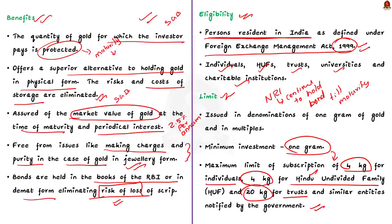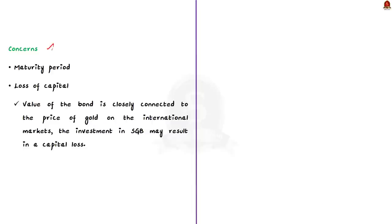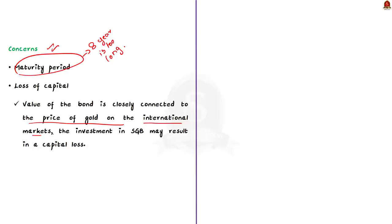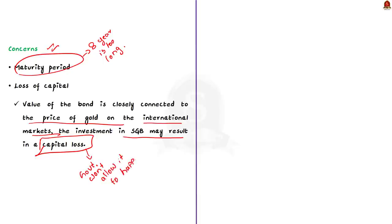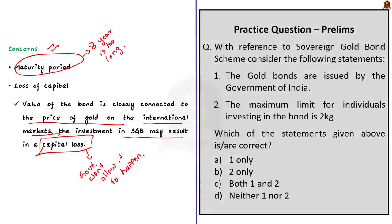One of the main concerns regarding Sovereign Gold Bonds is the maturity period — the eight-year maturity period may make many investors uninterested. Another concern is that since the value of the bond is closely associated with the international price of gold, the investment may result in capital loss. However, gold is a valuable commodity and the government is committed to ensuring its price remains stable. To recap, we saw important points about the Sovereign Gold Bond Scheme along with its advantages and disadvantages.